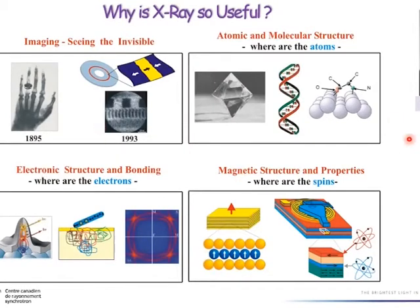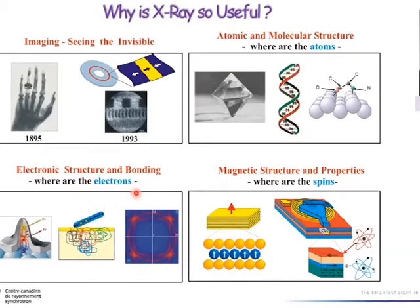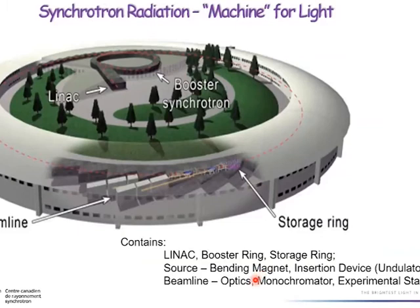Here are four pictures showing why X-rays are so useful. First, you can see things you cannot see with the bare eye. You can use technologies like diffraction to look at atomic and molecular structures. You can do spectroscopy analysis to get electronic or bonding structures. And using polarization, you can examine magnetic structures. These properties make X-rays very useful.